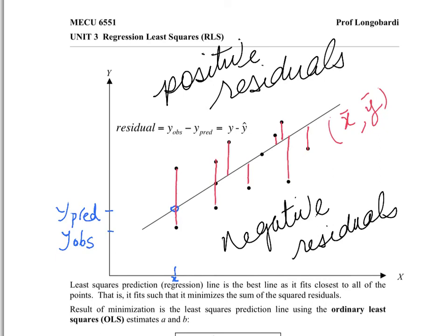In this case, if I added together the residuals — the pieces of string with their sign, making the ones below negative and the ones above positive — they would cancel each other out, just like the average of deviations from the mean. So, just as we squared the deviations from the mean, here we square the residuals and minimize the sum of squared residuals. And that is the definition of the least squares regression line.